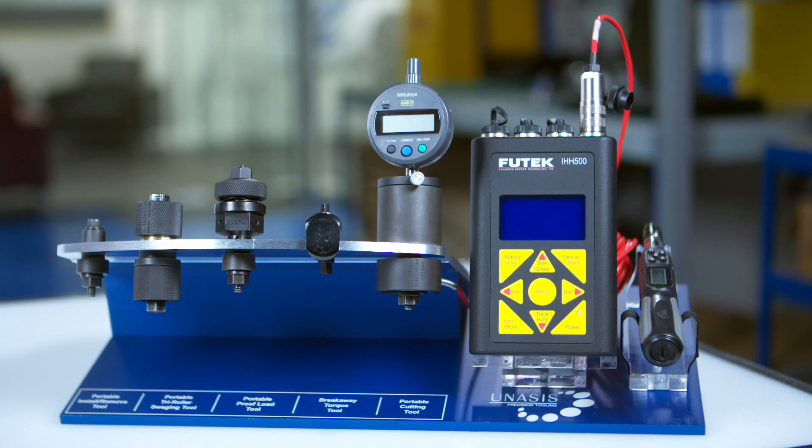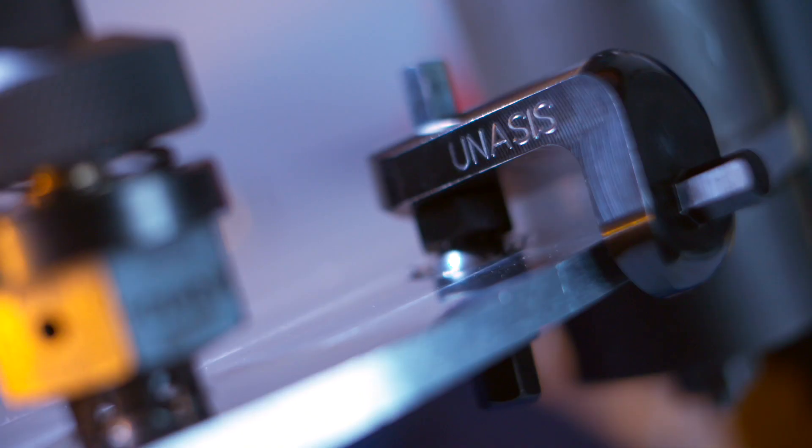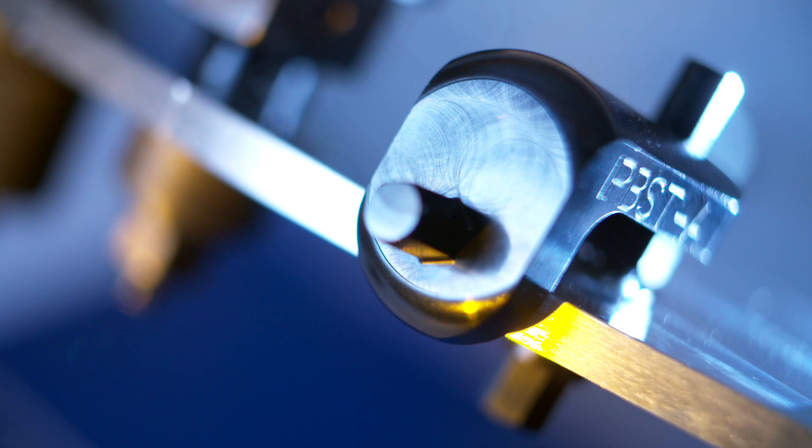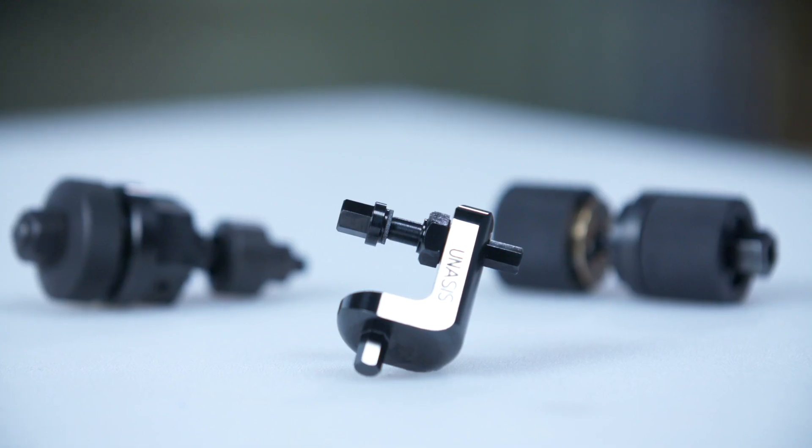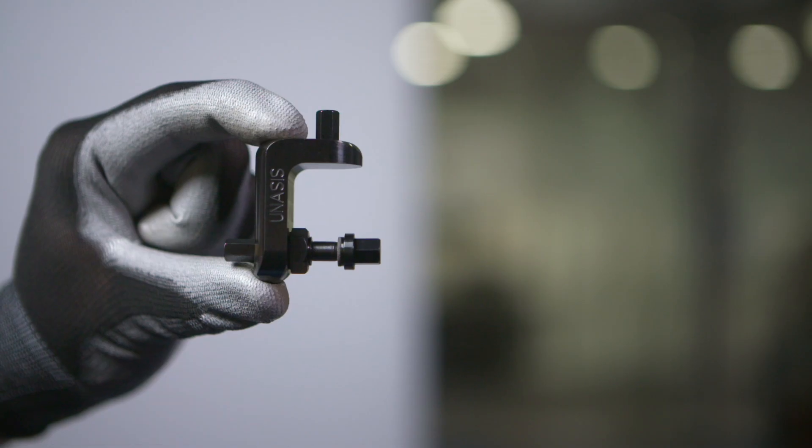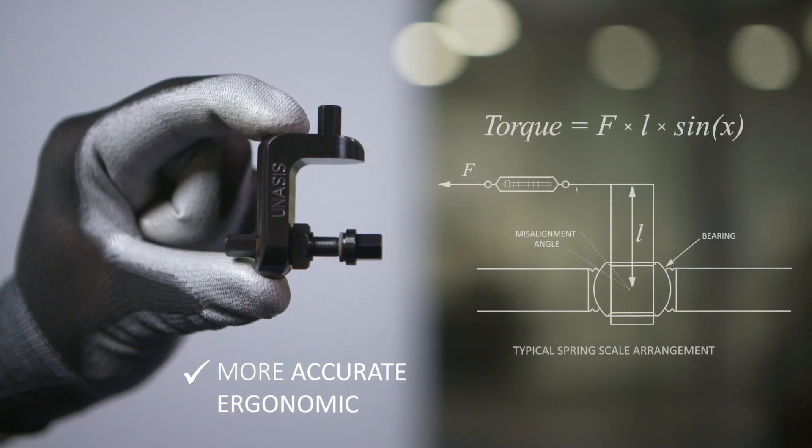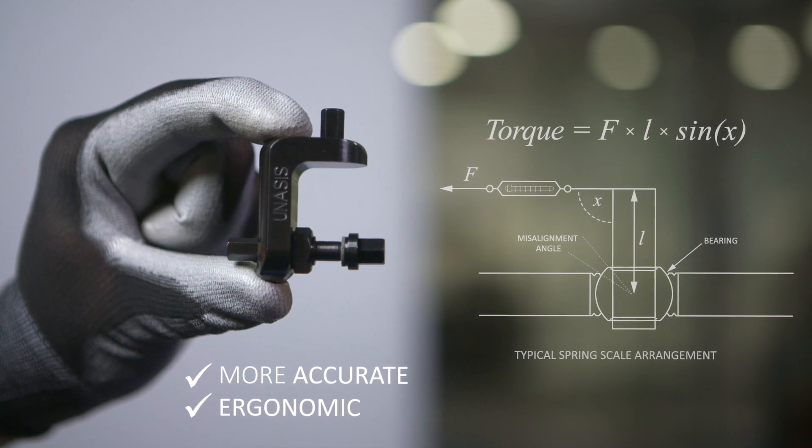How do you know if your bearings have been safely installed? The Unisys Swivel Torque tool tests for both breakaway torque and swivel torque, sometimes referred to as misalignment torque. This tool conforms to both Boeing and Airbus process specifications, among many other leading manufacturers, and is more accurate and ergonomic compared to a spring scale arrangement.